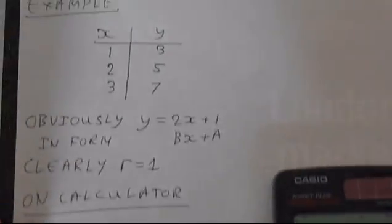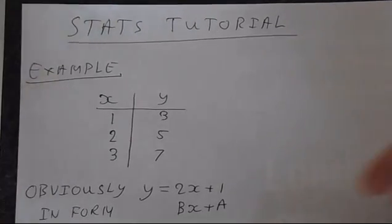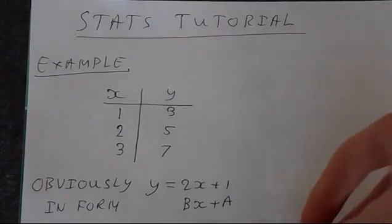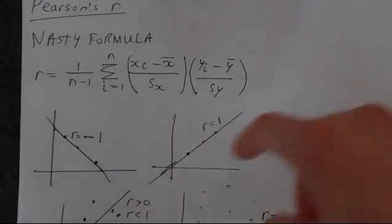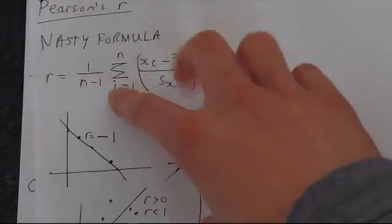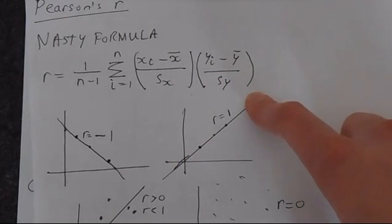If we move on to more complicated statistics, we can see that the calculator does things such as Pearson's R and regression. If you're not familiar with Pearson's R, the theory is very simple. It's got a very nasty formula. So you've got this big formula that does the calculation. It's a real pain to evaluate.